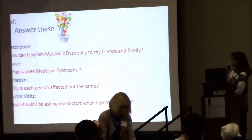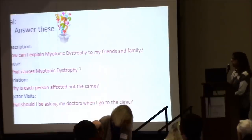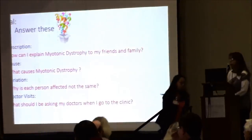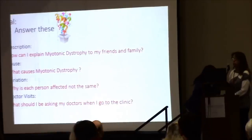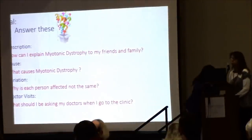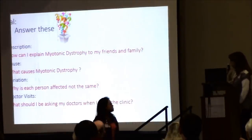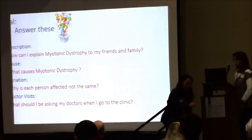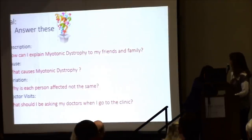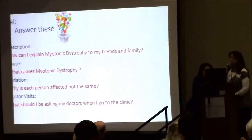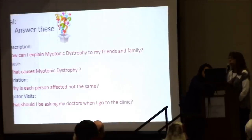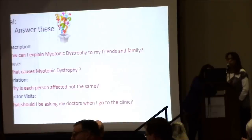First: how can I explain myotonic dystrophy to my friends and family? What causes myotonic dystrophy — what is the pathogenesis — and why is each person with myotonic dystrophy different? Why are some people affected earlier in life with more severe symptoms? And lastly, what should we talk about at doctor visits? When I go to my clinic visit, what are appropriate things to ask, and am I getting the appropriate treatment and checkups?